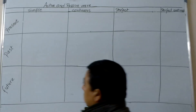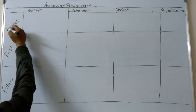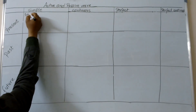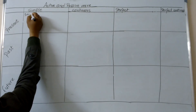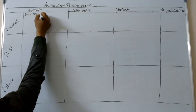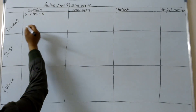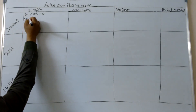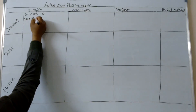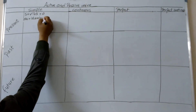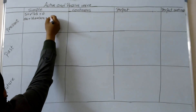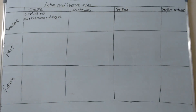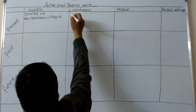Now let's start. In present simple, the active voice formula is subject plus V1 or V5 plus object. And the formula of passive voice is object plus is/am/are plus V3 plus by plus subject.